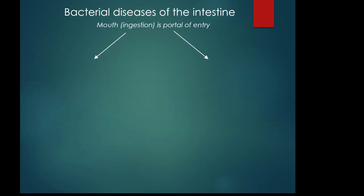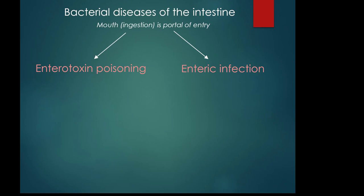Now let's turn to the big area of infection: the intestines. The mouth is always going to be the portal of entry for anything new. We can look at intestinal diseases in two different ways. One way is actually consuming a pre-formed toxin or enterotoxin — 'entero' means intestine — that is on your food. The key distinction is that it's not the bacteria but the toxin causing the disease. An enteric infection is different: you ingest the full pathogenic bacteria, which colonize or invade the intestine.